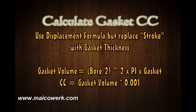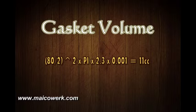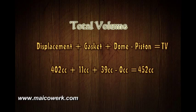We can calculate the gasket volume by replacing stroke in the displacement formula with the gasket thickness. The bore can be looked at as slices of volume — we just multiply those slices by the total height, which in this case is the gasket thickness. The total volume is the displacement plus the gasket volume plus the dome minus the piston, which in this case is 0. So we have a total volume of 452cc.